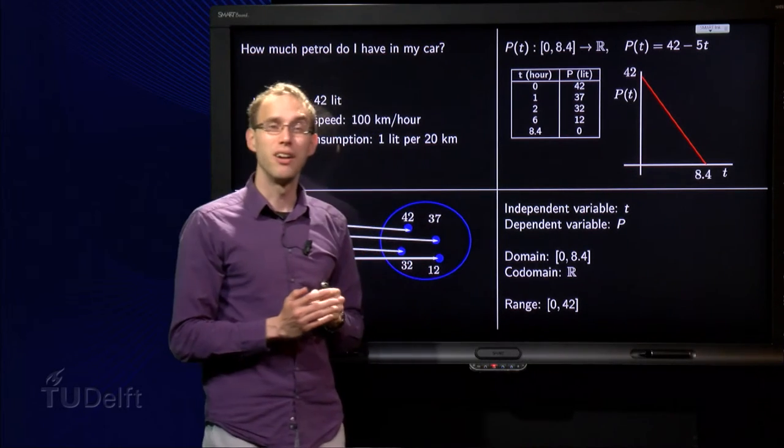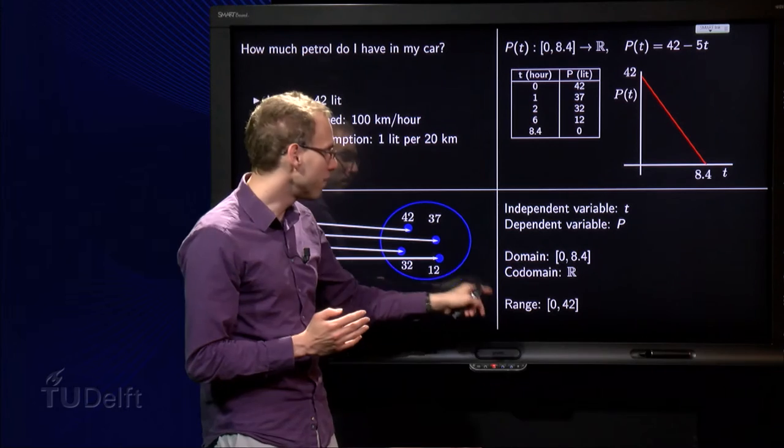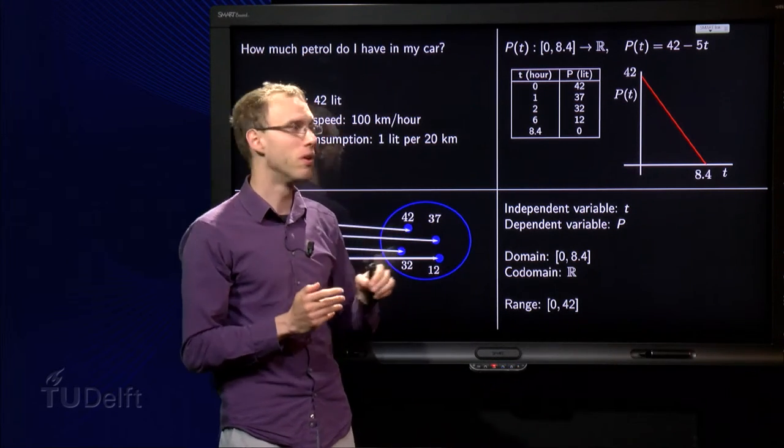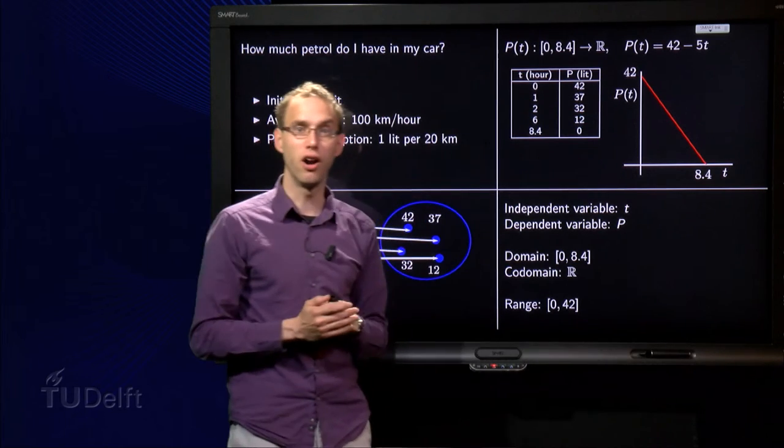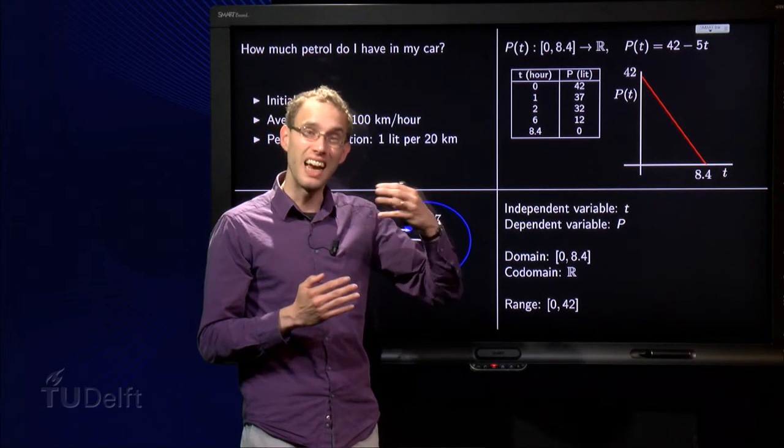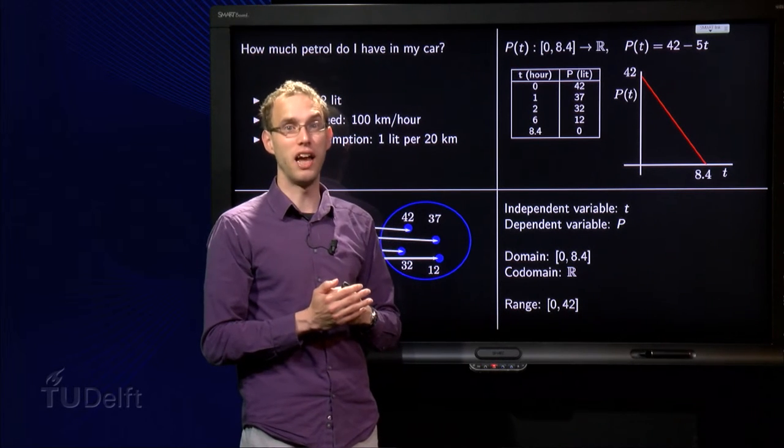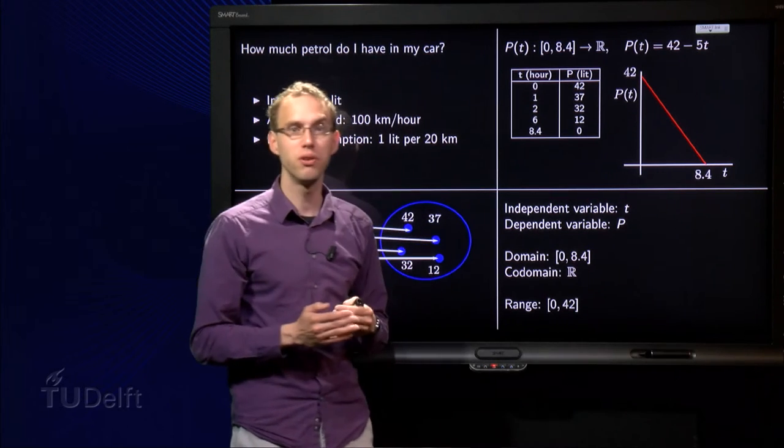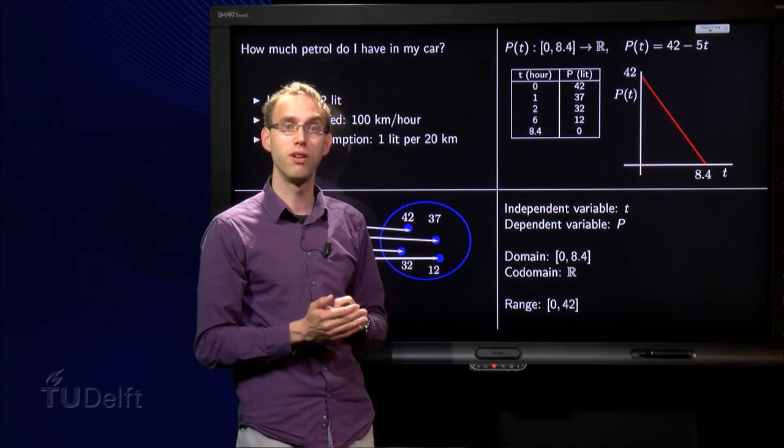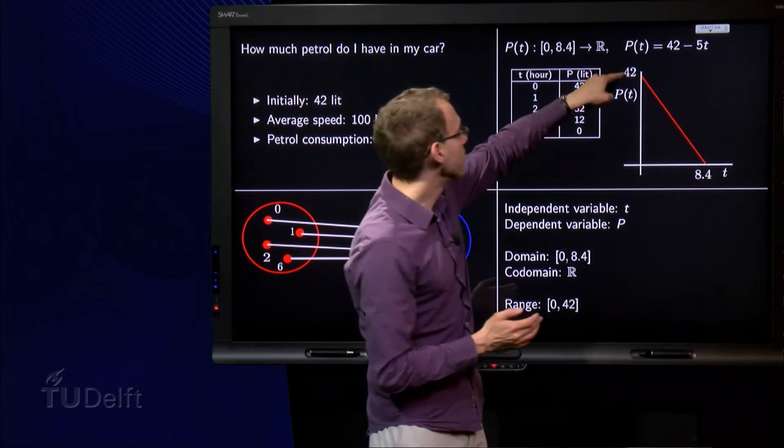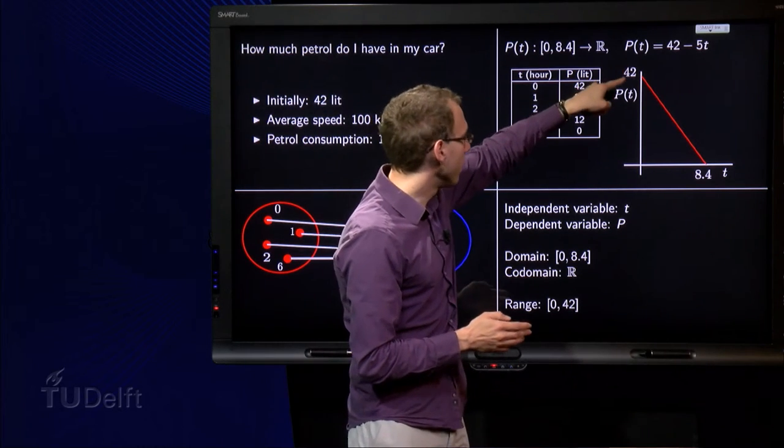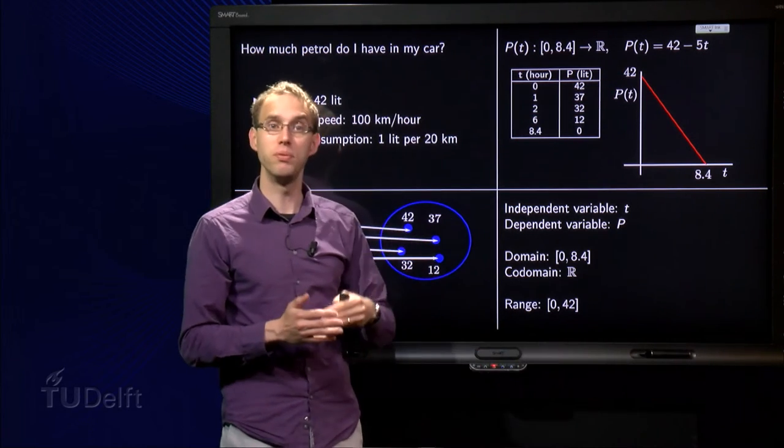Since we have a particular easy function, we even are able to find the range of this function. That is, in general, hard to do. You can see it from the graph. The range is a subset of the codomain, the values which are actually attained by the function f. As you see, well, I cannot reach negative values, of course, because I cannot have a negative amount of petrol in my tank. And you see that you cannot get above 42, which also makes sense. So the range is actually the set of all values between 0 and 42.